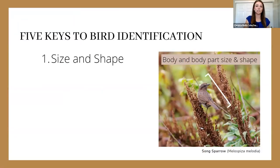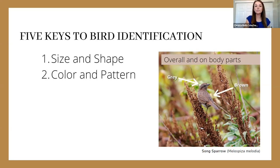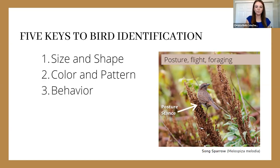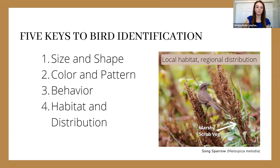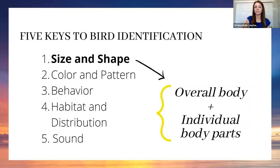The five keys to bird identification are: first, size and shape — including the overall body size and shape as well as the size and shape of individual parts; second, colors and patterns; third, behavior — posture, flight, and foraging movements; fourth, habitat and distribution — where they're found locally and regionally by season; and fifth, sound. Today we're focusing on size and shape.